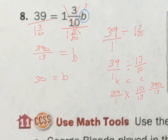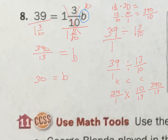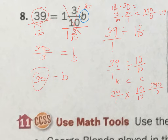Then I can put 30 in here. If I do 1 and 3 tenths times 30 — making it improper: 13 over 10 times 30 over 1 — that's going to get me 13 times 30 equals 390, and 1 times 10 is 10. 390 divided by 10 gets me 39, which checks out. So the answer is 30. Lots of work and lots of steps — you've got to remember how to divide fractions and keep-change-change.